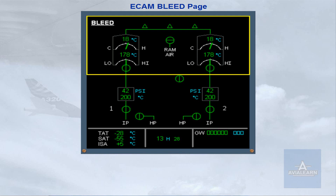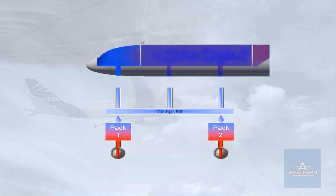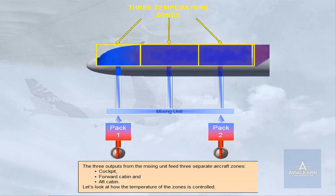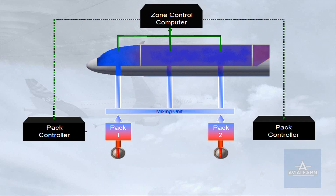Having discussed the air conditioning packs, we will now look at how temperature and flow regulation is achieved throughout the aircraft. The three outputs from the mixing unit feed three separate aircraft zones: cockpit, forward cabin, and aft cabin. A zone controller monitors the temperatures of the three zones and sends signals to the pack controllers to set the air temperature delivered by the packs.